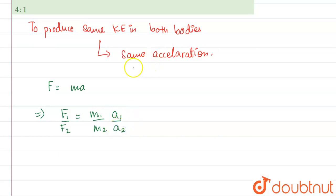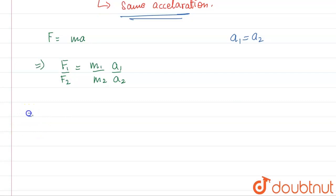Over here, since we must have the same acceleration, that means A1 must be equal to A2, that means over here what will happen is that the F1 by F2 quantity will be equal to M1 by M2.